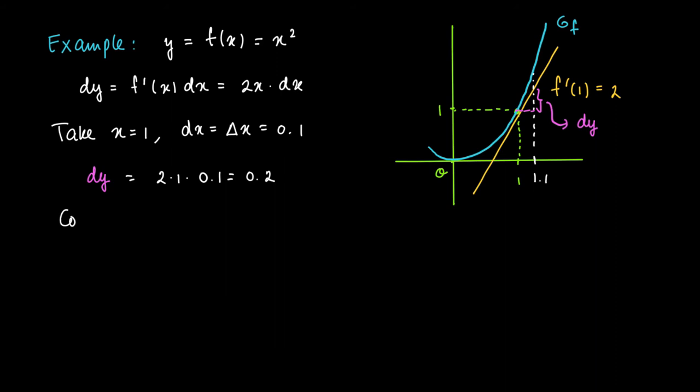For this function it's not hard to calculate the precise change in function value. So Δy equals the function value at 1 plus Δx minus the function value at 1. Look at the figure, and then here in yellow we indicate the precise change from going from 1 to 1.1.